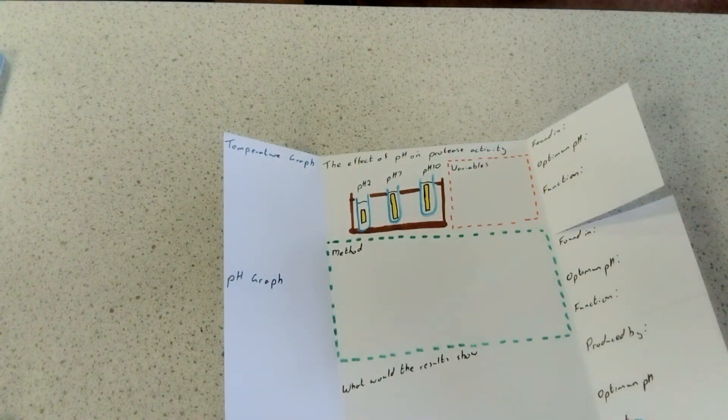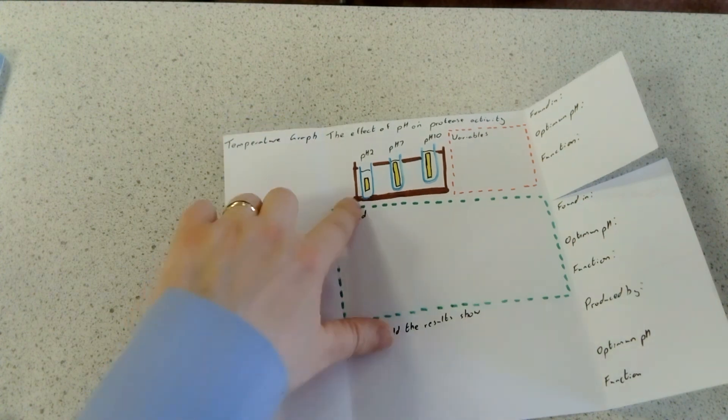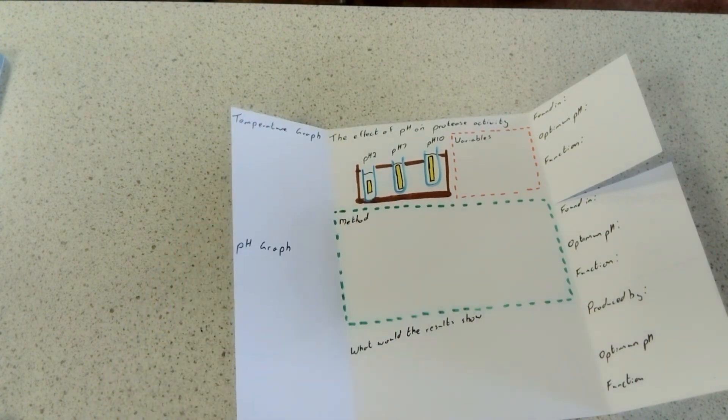Think about if you're doing it, how many times you're going to repeat it. How are you going to make it more accurate? How could we make it more precise? Then underneath that, what your results will show. If the piece of protein left is shorter, the better the enzyme worked. Think about how you could graph that.